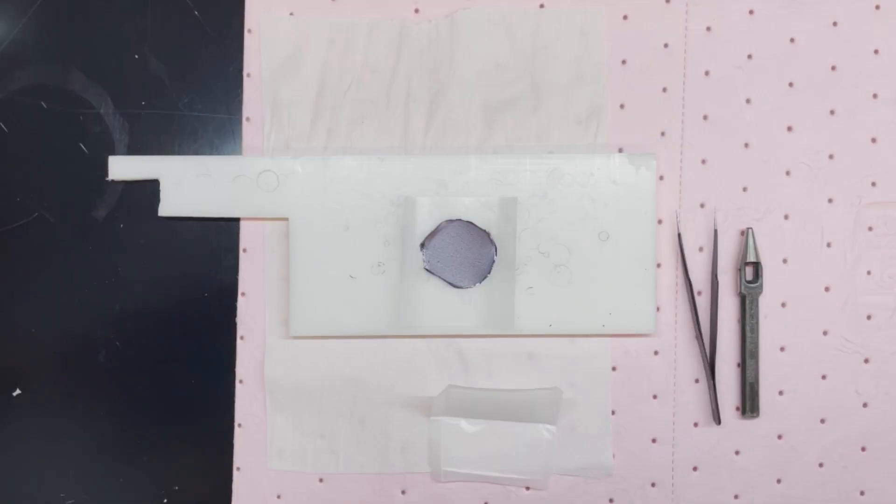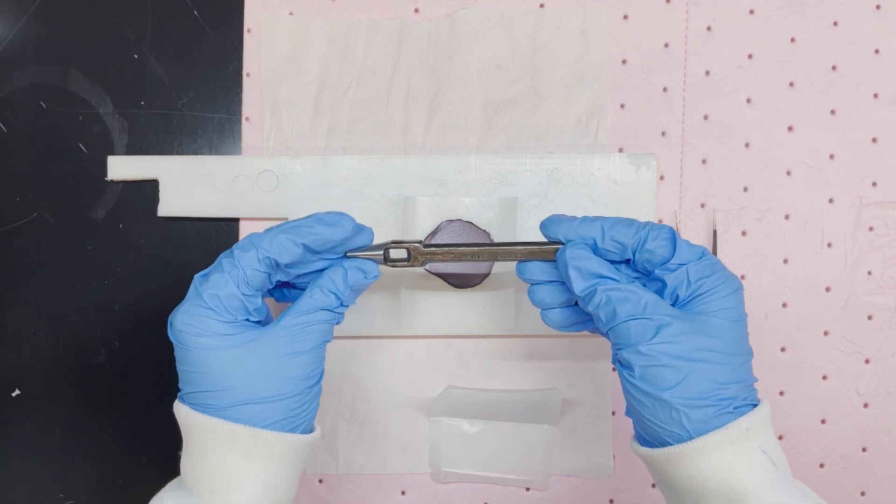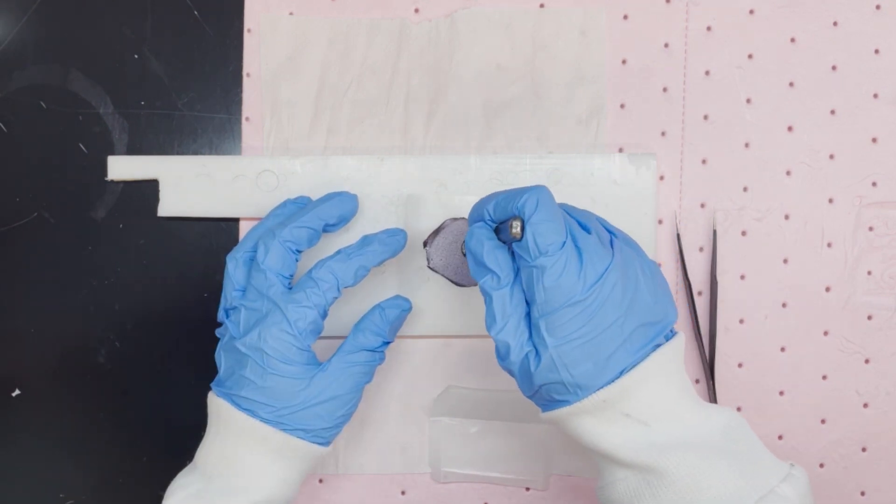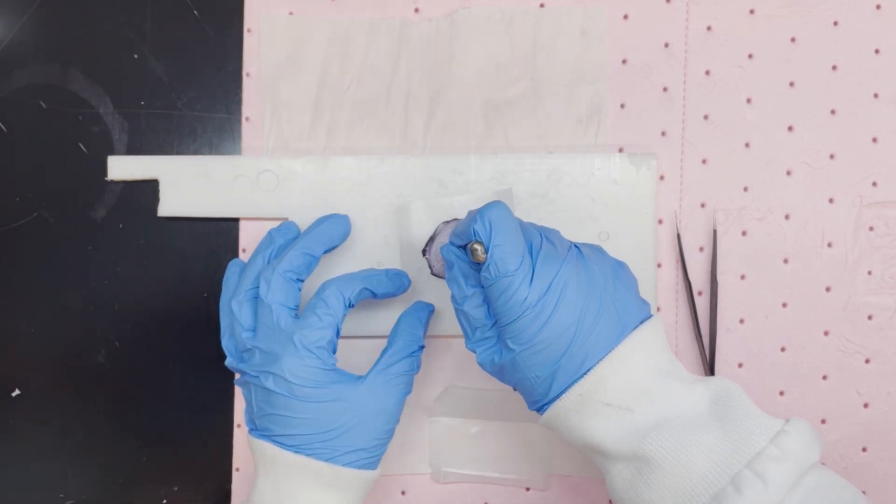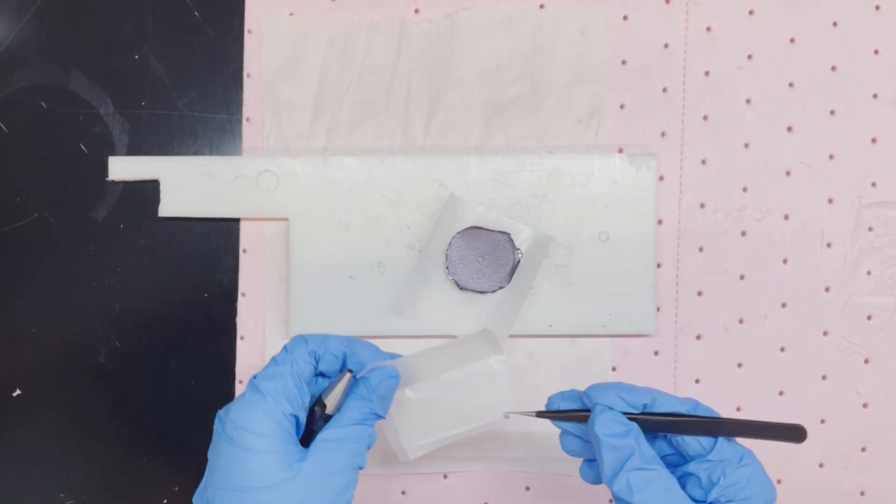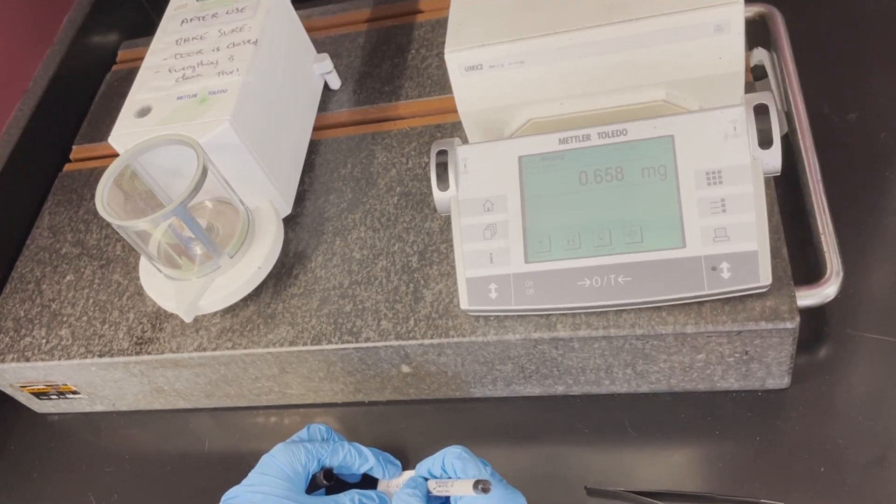Here we first show how to prepare electrodes with specific diameters using the working electrode as an example. For the working electrode, we use a puncture with a three millimeter diameter. A piece of weight paper is put in between the working electrode and the teflon board to keep the material clean. With this setup, we can punch out a circular electrode and measure its mass for gravimetric analysis.